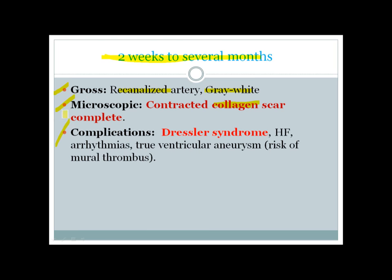The most important complications after 2 weeks or day 14 include Dressler syndrome, which can occur from 1 week to 4 weeks after MI, as well as heart failure, arrhythmias, and true ventricular aneurysm — which also carries an increased risk of developing mural thrombus.